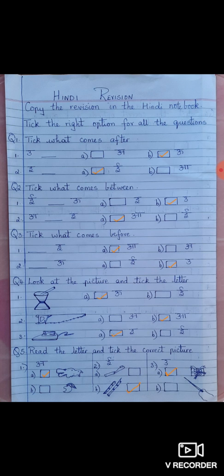Tick what comes after E. Option A, E. Option A, A, E. Option B, E. The right answer is option A, A, E.